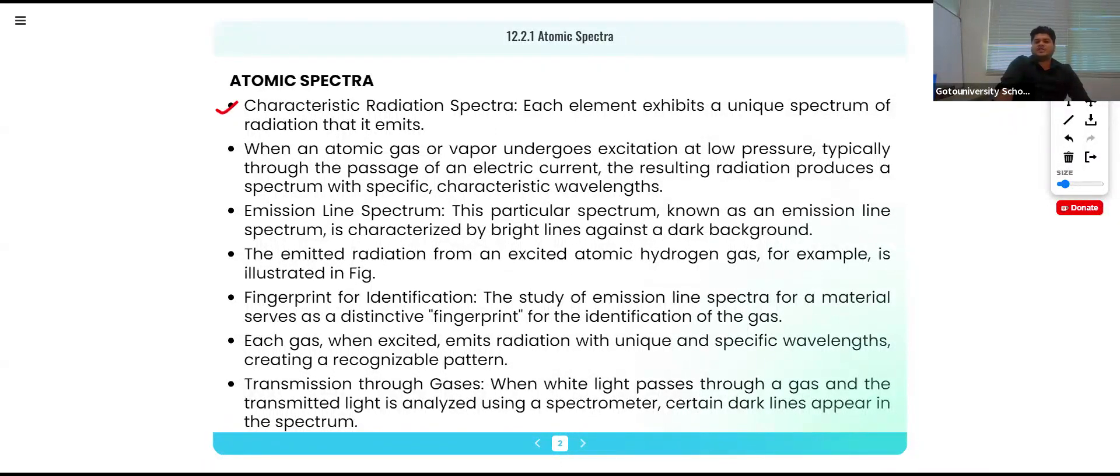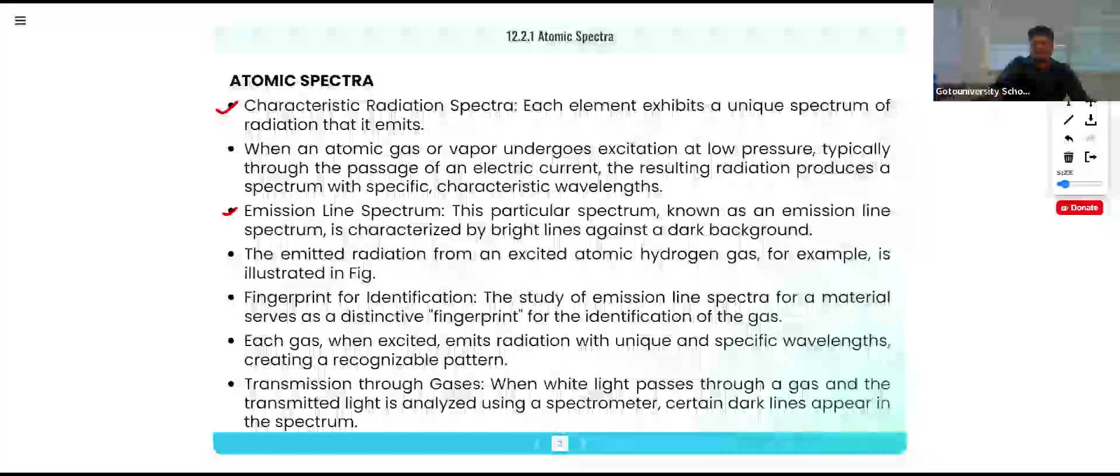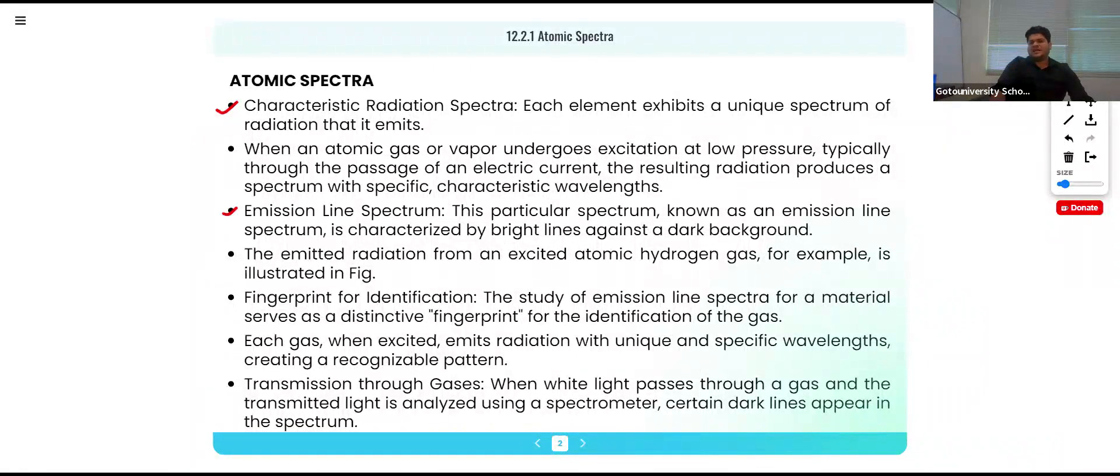When an atomic gas or vapor undergoes excitation at low pressure, typically through the passage of electric current, the resulting radiation produces a spectrum with specific characteristics. The particular spectrum known as emission line spectrum is characterized by bright light against a dark background. The emitted radiation from an excited atomic hydrogen gas for example is illustrated.